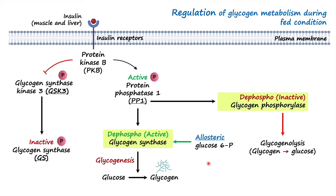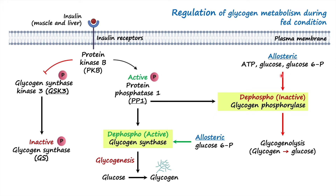Glycogen synthase is also allosterically regulated. When too much glucose is converted into glucose-6-phosphate and it accumulates in the cells, it allosterically activates glycogen synthase and diverts glucose-6-phosphate into the glycogenesis pathway to synthesize glycogen. At the same time, glycogen phosphorylase is allosterically inhibited by ATP, glucose, and glucose-6-phosphate, inhibiting glycogenolysis. ATP, as an indicator of energy-rich cells, and glucose can also allosterically inhibit glycogen phosphorylase.